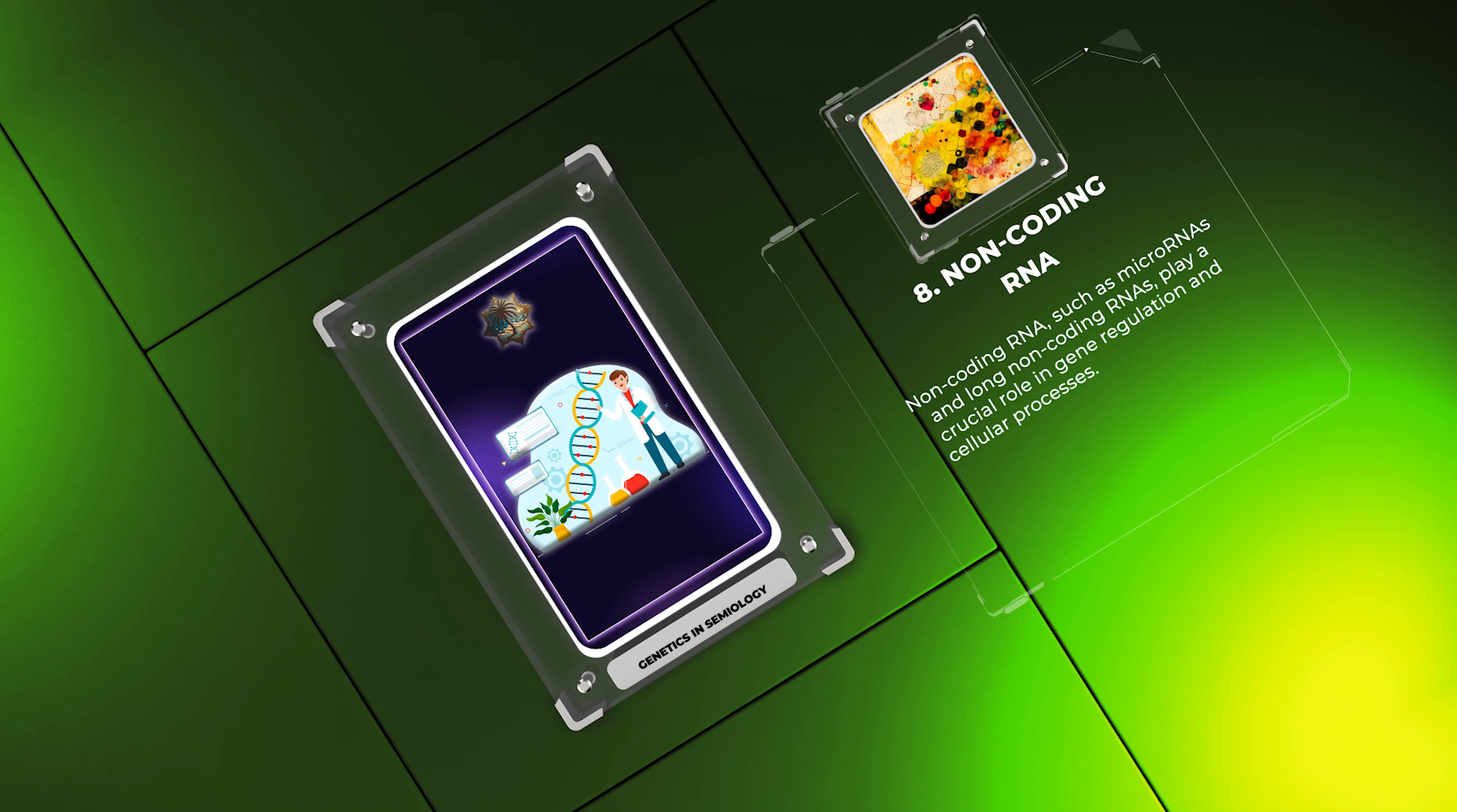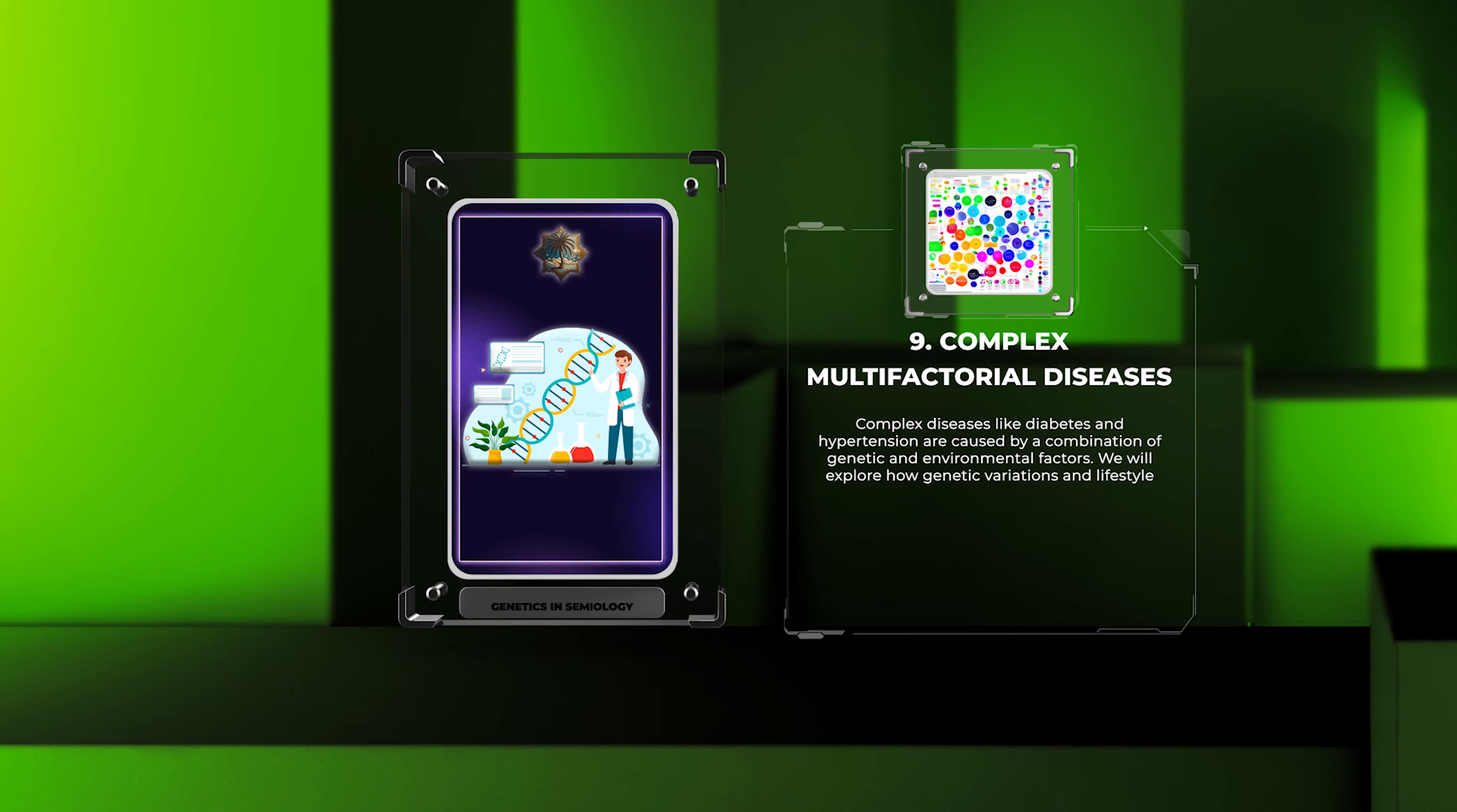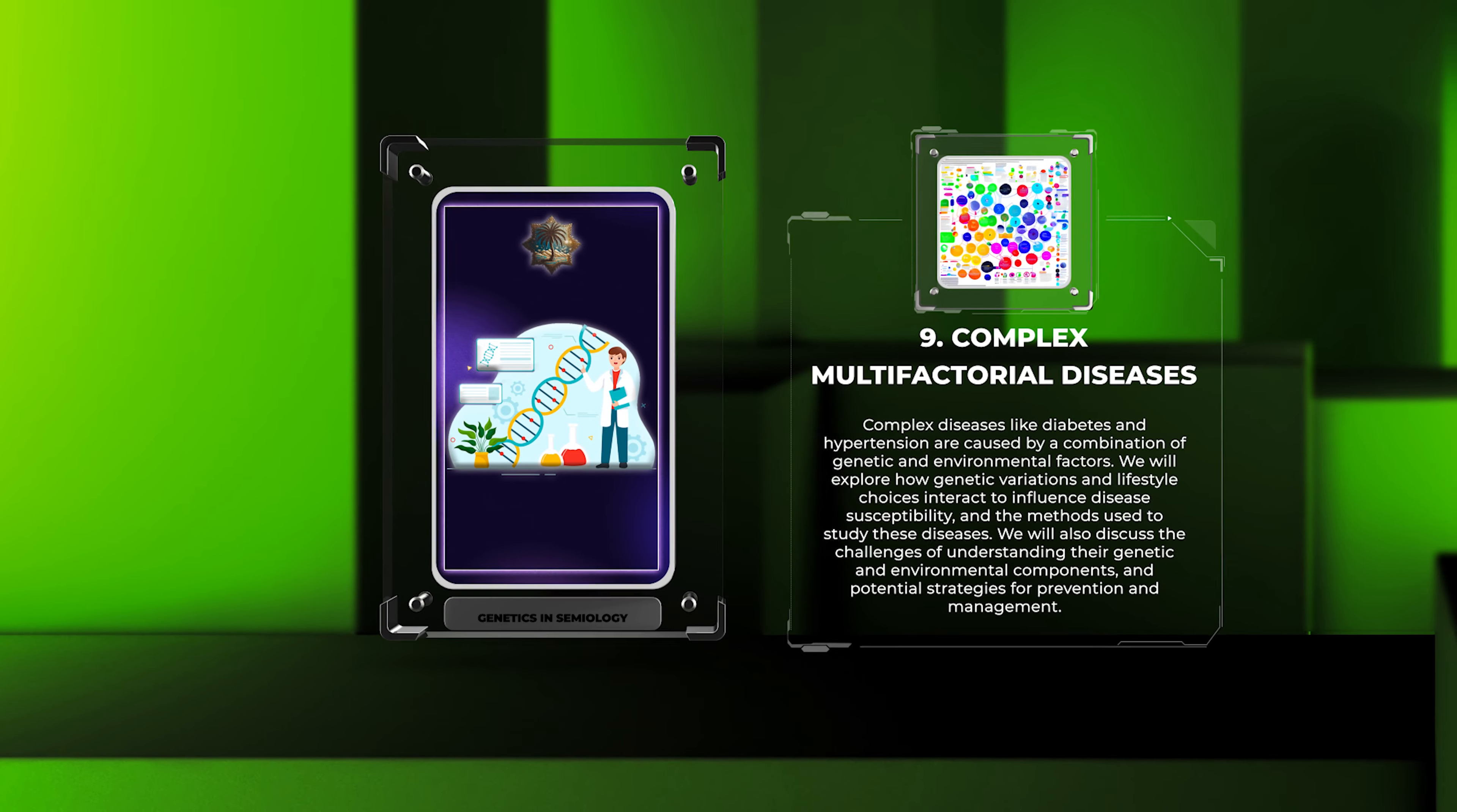Non-coding RNA, such as microRNAs and long non-coding RNAs, play a crucial role in gene regulation and cellular processes. Dysregulation of these molecules can lead to diseases. They also have potential as diagnostic markers and targets for therapeutic interventions. Complex diseases like diabetes and hypertension are caused by a combination of genetic and environmental factors. We will explore how genetic variations and lifestyle choices interact to influence disease susceptibility, and the methods used to study these diseases. We will also discuss the challenges of understanding their genetic and environmental components, and potential strategies for prevention and management.